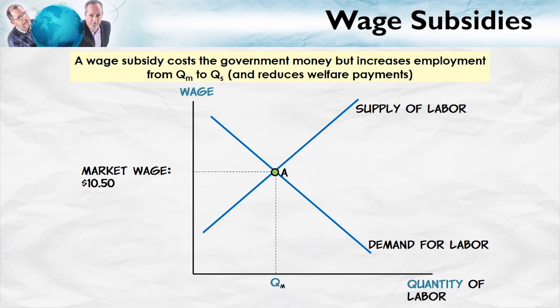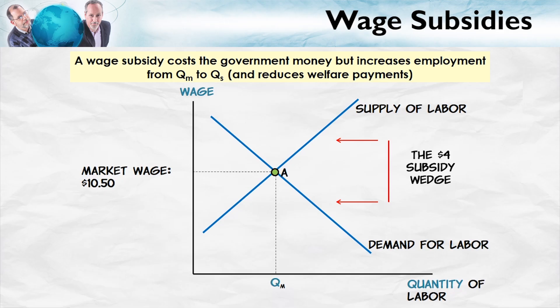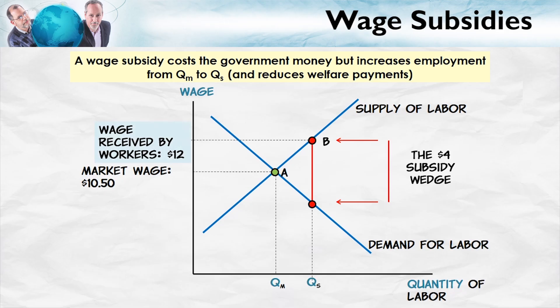If that's what we're interested in, then Edmund Phelps argues that one of the best means of doing this is through a wage subsidy. We'll imagine that the market wage starts out at $10.50, and here's the quantity of labor exchanged at that market wage. Our wage subsidy is given by a wage wedge — let's call this a $4 wage wedge — and as usual, we drive it into the diagram.